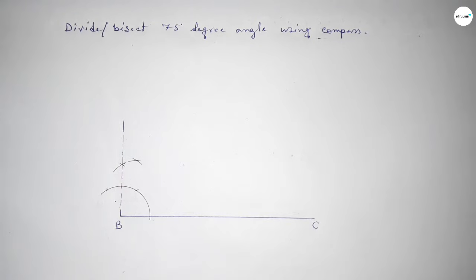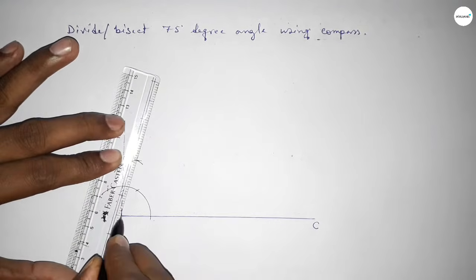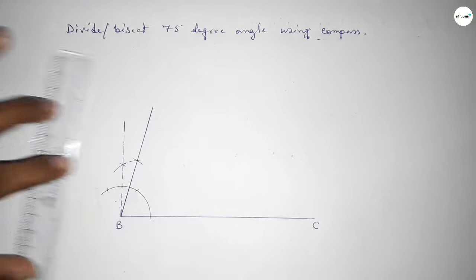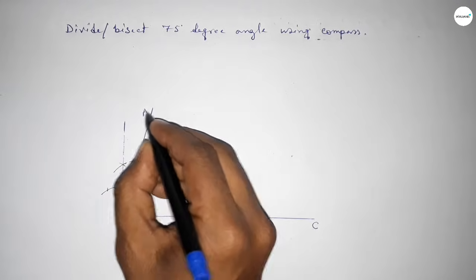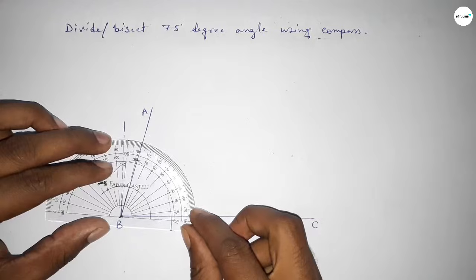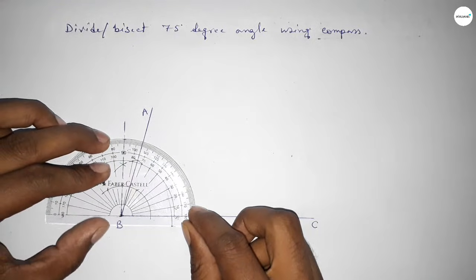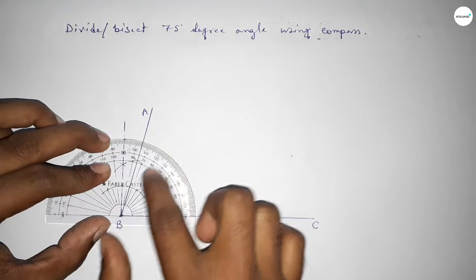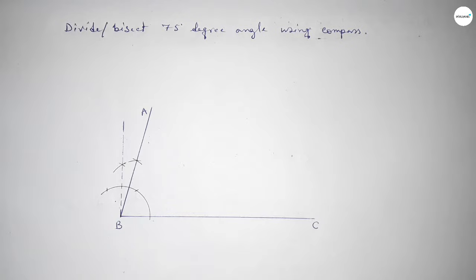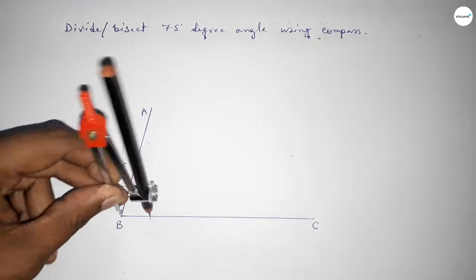Now joining this line to get a 75 degree angle and taking here a point. Now checking whether it is 75 degree or not. So this is perfectly a 75 degree angle. Now bisecting this angle.